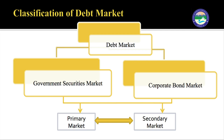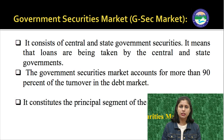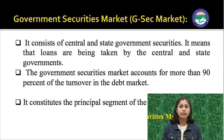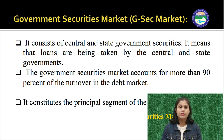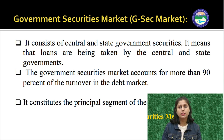The debt market is classified into the government securities market and the corporate bond market. The debt market deals in both primary market and secondary market. The government securities market consists of central and state government securities — for example, national savings certificates. The government security market accounts for more than 90% of the turnover in the debt market, making it the principal segment of the debt market.